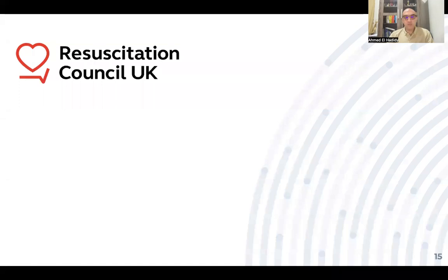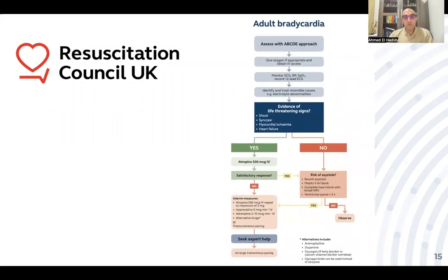Checking the Resuscitation Council UK algorithm to see if there are major differences: the RCUK adult bradycardia algorithm begins with the same ABCD approach as the ERC. Give oxygen if needed, monitor ECG, blood pressure, and saturation, perform a 12-lead ECG, search for and treat reversible causes, then check for life-threatening signs: shock, syncope, myocardial ischemia, and heart failure — all the same as ERC.